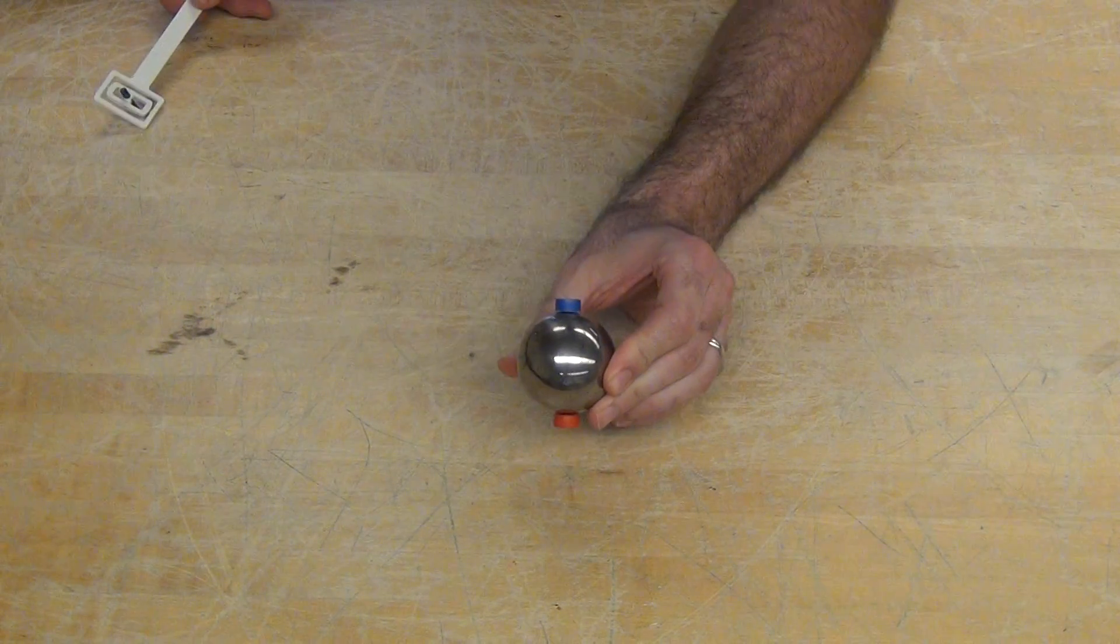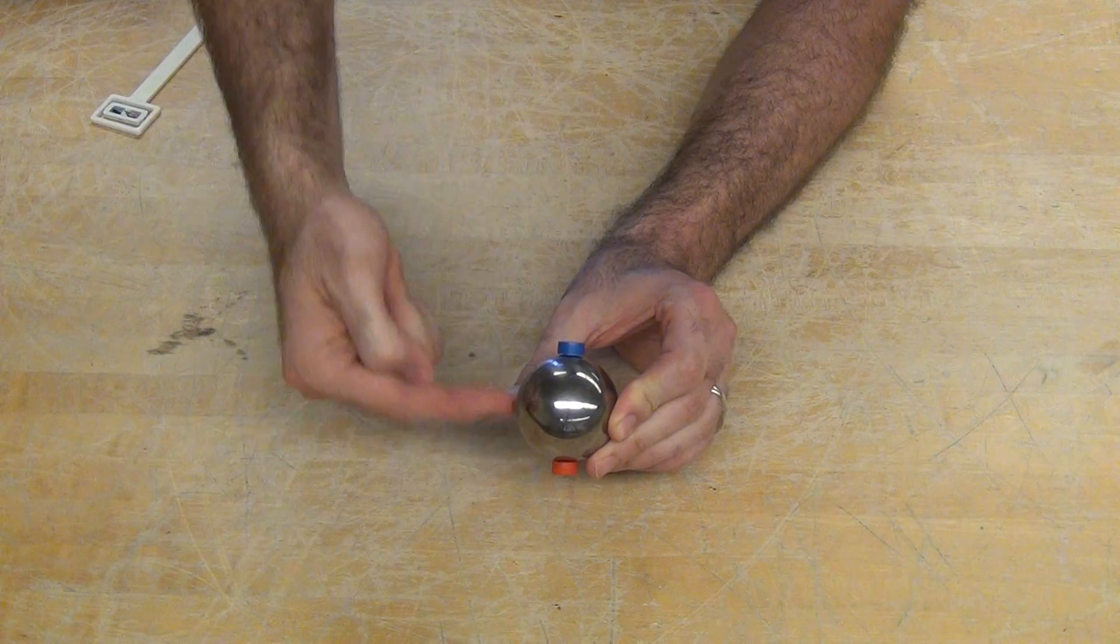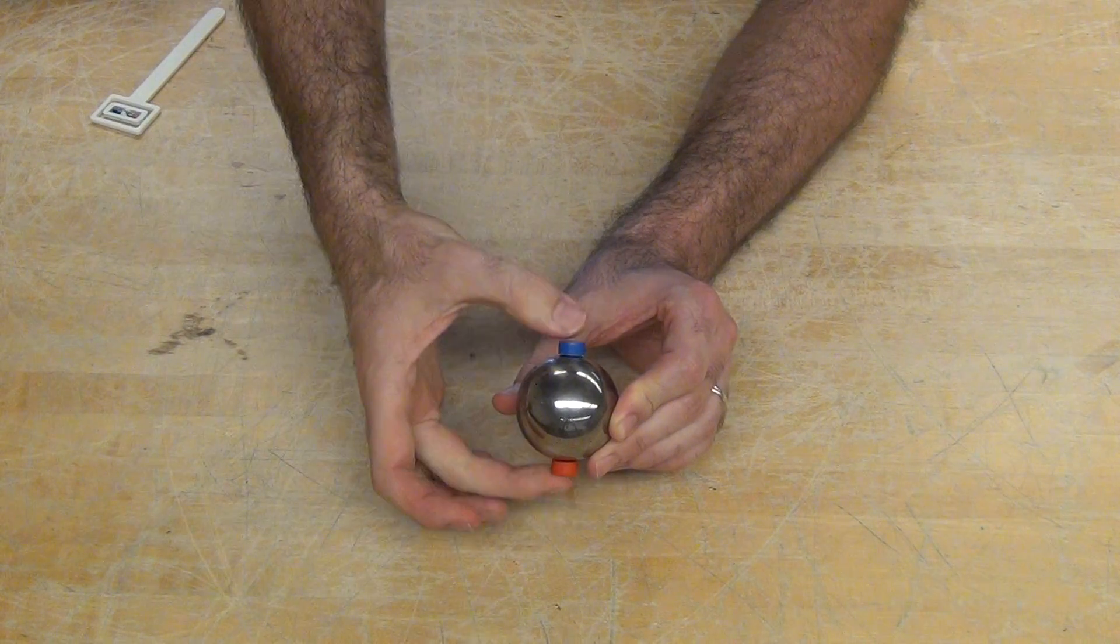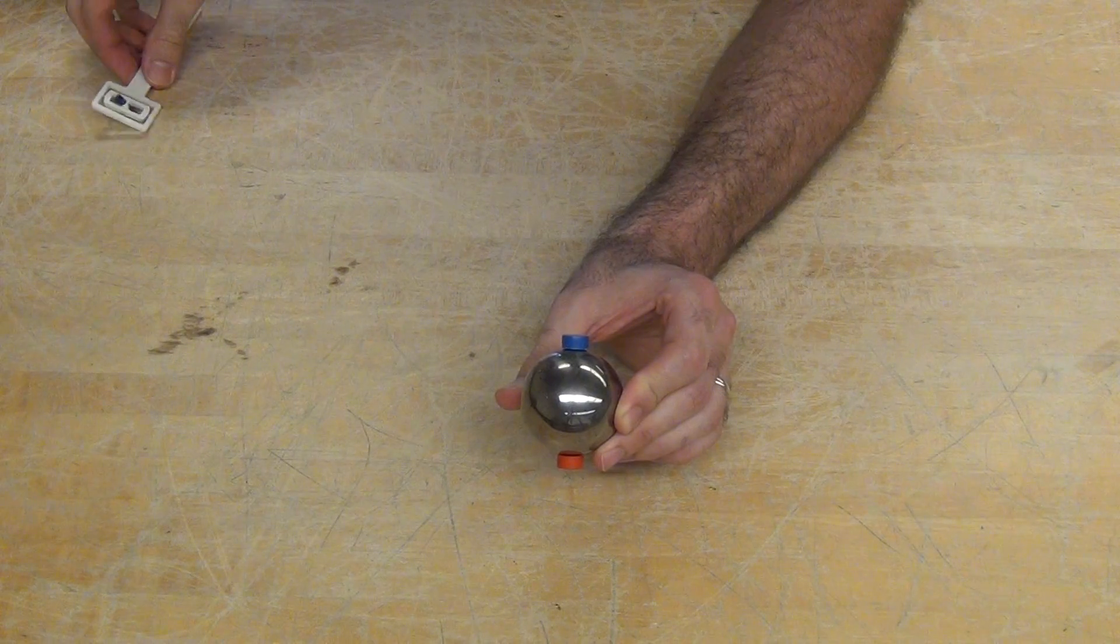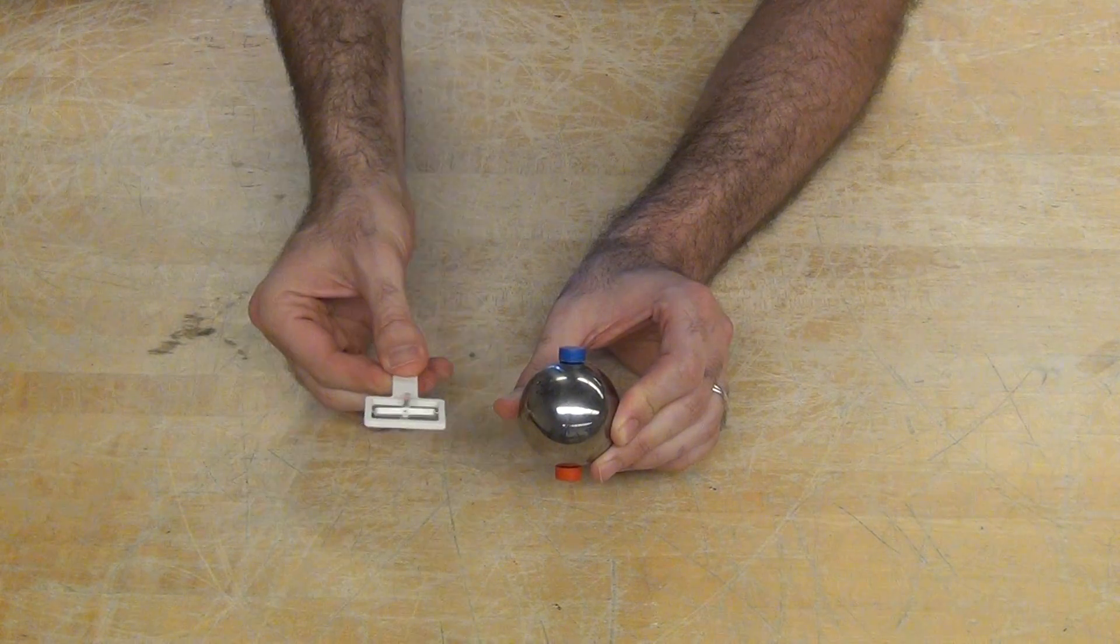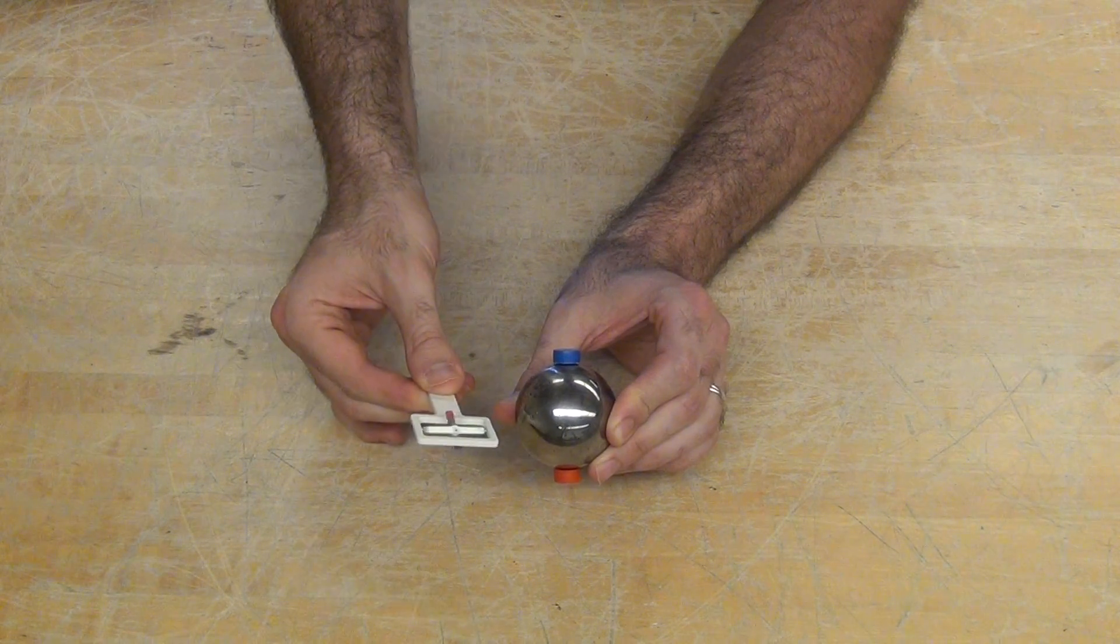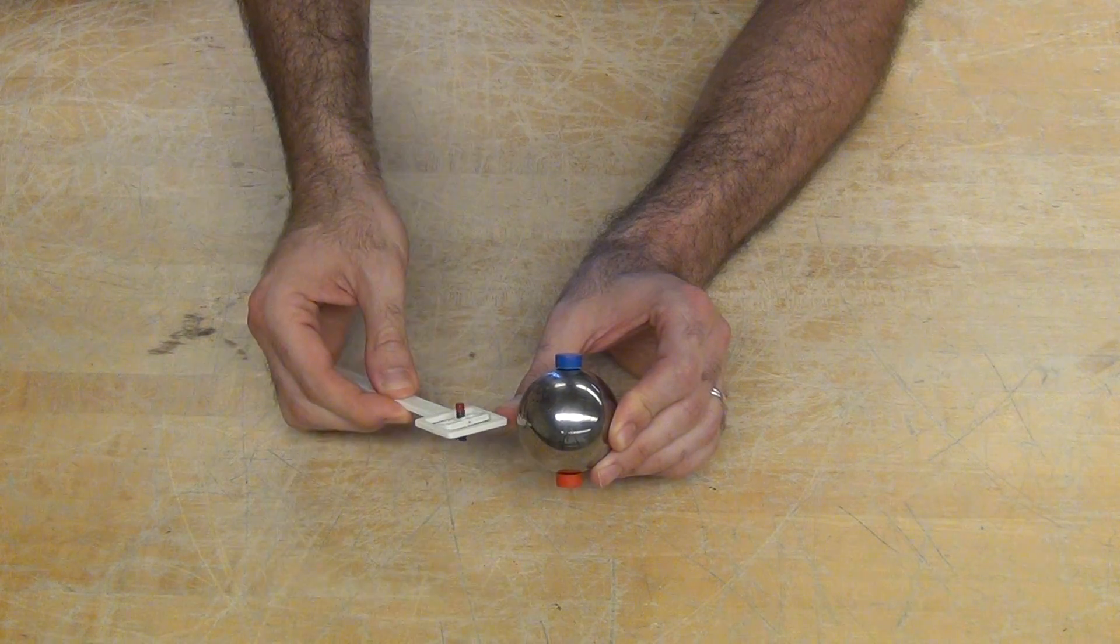Now, the magnetic field of the earth can loosely be approximated as a bar magnet embedded in the earth. And so, if we now look at something free to rotate as it moves around that, we can see,